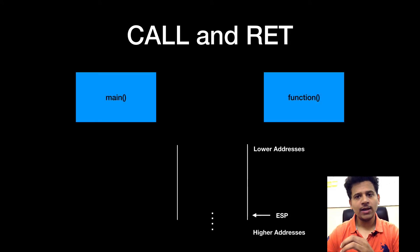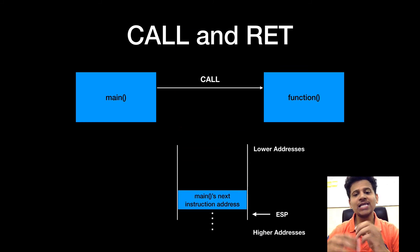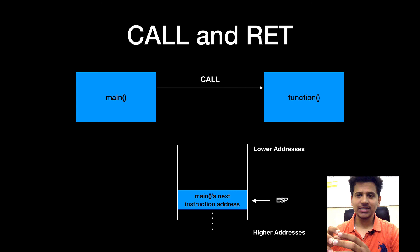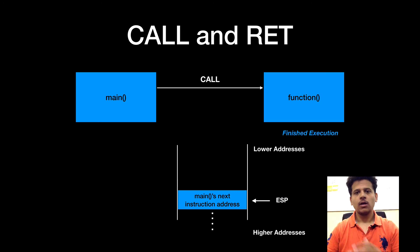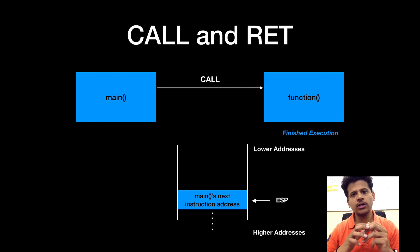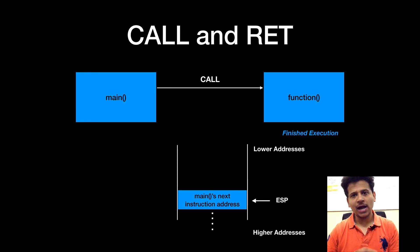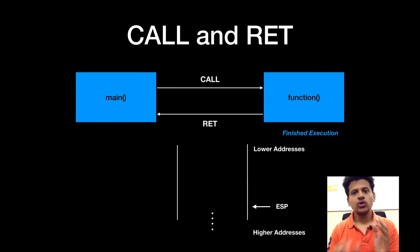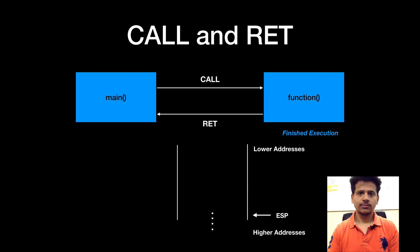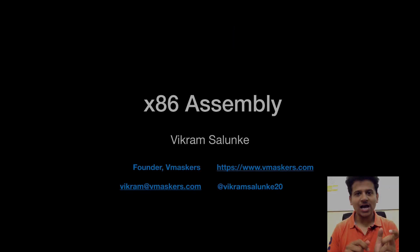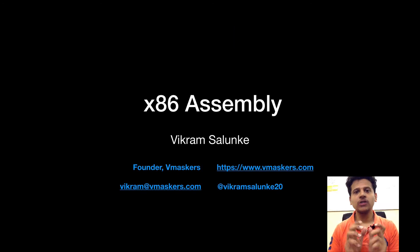When main calls a function, it pushes its next instruction address to the stack. After finishing its execution, the function pops main's next instruction address into EIP, and with the help of that, it returns to main. This is how call and return work together.